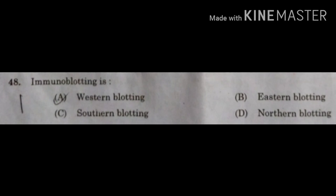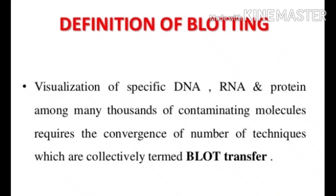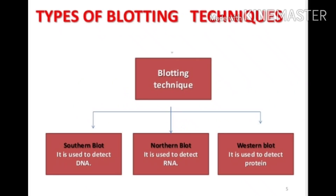The next question is: immunoblotting is — option A: western blotting; option B: eastern blotting; option C: southern blotting; option D: northern blotting. Blotting is a visualization technique for specific DNA, RNA, and protein molecules among thousands of contaminating molecules. Blotting techniques are mainly three types: southern blot, northern blot, and western blot. Southern blot detects DNA, northern blot detects RNA, and western blot detects protein.